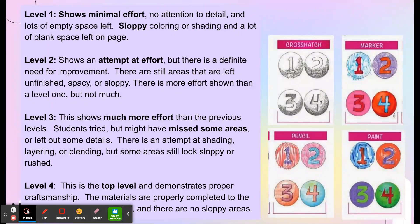There are craftsmanship levels. Level one shows minimal effort — no attention to detail and it looks sloppy. Level two is when you put in a little bit of effort; there's an attempt but a need for improvement, with some areas left unfinished, spacey, or sloppy. Level three shows clear effort but some areas still need improvement — you might have rushed through one portion, or there's some bleeding of markers or paints, or some sloppy shading, but it's minimal. Level four is what we strive for: it demonstrates proper craftsmanship, everything is neatly filled in, you took your time, and it's very detailed.